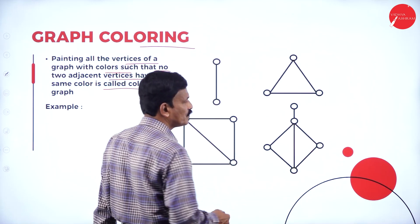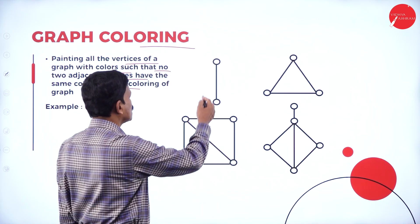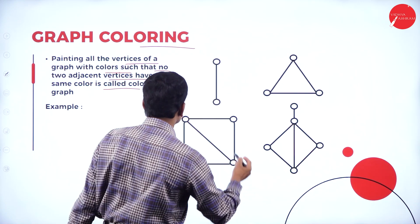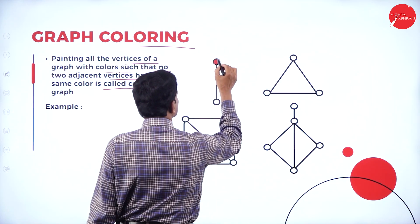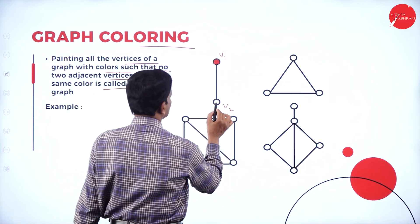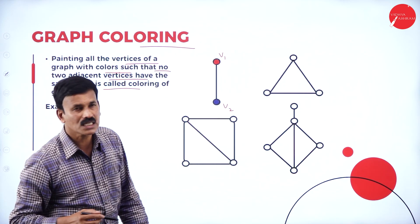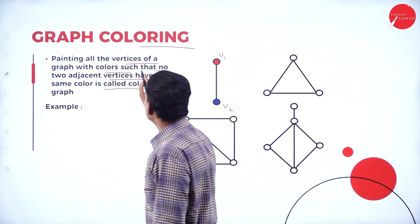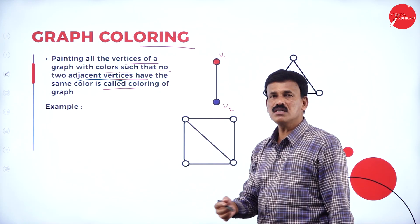Now let us take an example. Here are different types of graphs — some are closed and some are not closed. Let us consider the first graph. There are two vertices V1 and V2, so we can give two different colors. Let us give red color for V1. This vertex is connected to the second vertex V2, so let us represent V2 with another color. So V1 is one color and V2 is another color — this is how we paint. This painting is nothing but coloring of a graph, meaning no two adjacent vertices have the same color.